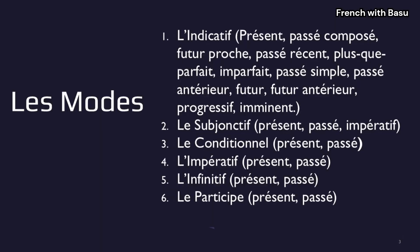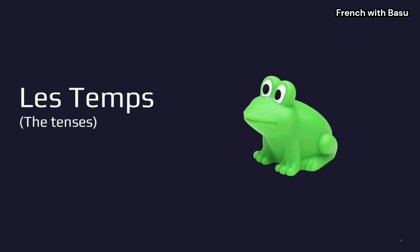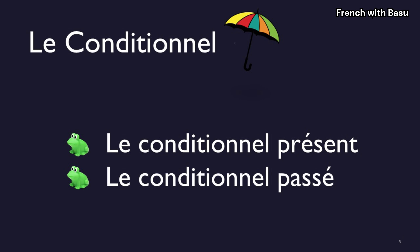Before teaching any tense, let us first talk about the moods. There are six moods in French: l'indicatif, le subjonctif, le conditionnel, l'impératif, l'infinitif, and le participe. The moods are like umbrellas and the tenses are like frogs which come under these umbrellas. Under the umbrella of the conditionnel mood, there are only two tenses: le conditionnel présent and le conditionnel passé. We will only discuss le conditionnel présent in this video.